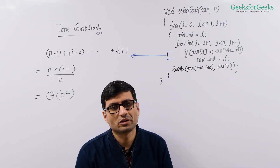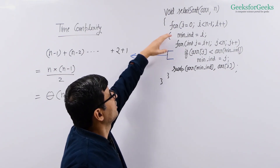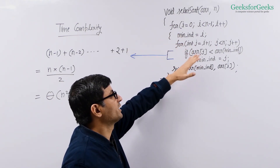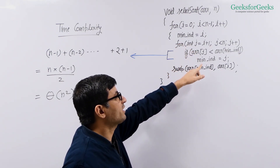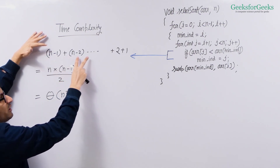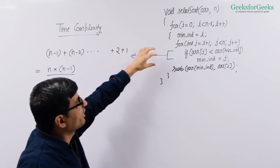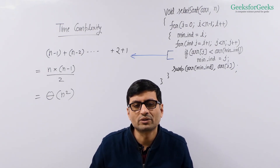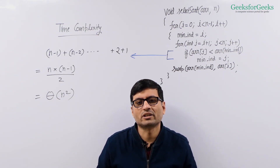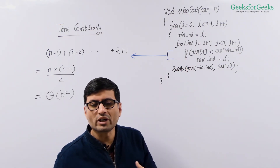Let us now see the time complexity of selection sort. The innermost statement executes the maximum number of times. When i is 0 it executes n-1 times, when i is 1 it executes n-2 times, and when i reaches n-2 it executes 1 time. Summing the series (n-1) + (n-2) + ... + 2 + 1 gives n(n-1)/2, which is Θ(n²). So the time complexity of selection sort is Θ(n²). In selection sort there is no best case with time complexity less than n²; it always takes n² time — whether you provide a sorted array, a reverse sorted array, or any other input.